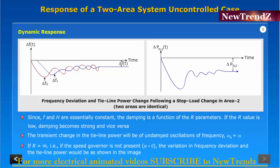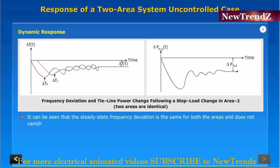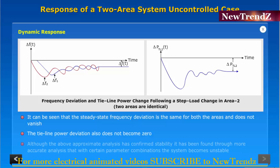The variation in frequency deviation and the tie-line power would be as shown in the image. It can be seen that the steady state frequency deviation is the same for both the areas and does not vanish. The tie-line power deviation also does not become zero.